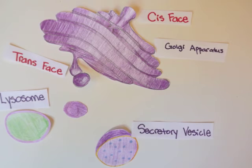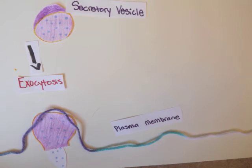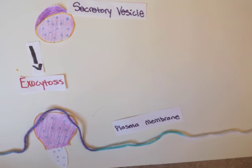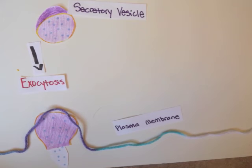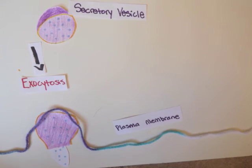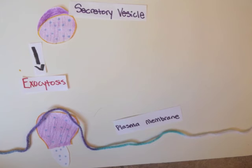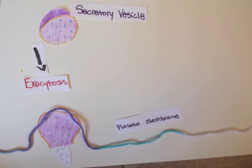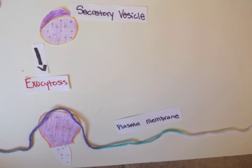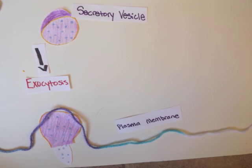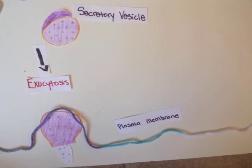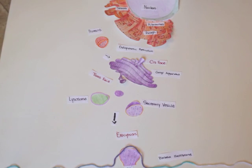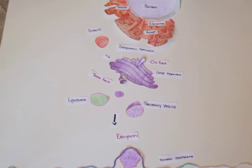Secretory vesicles contain secretions that will be discharged from the cell through exocytosis. Lysosomes contain digestive enzymes and are responsible for cleaning up damaged parts of the cell and secreting the waste products. During exocytosis, the vesicle travels through the cytoplasm, fuses to the plasma membrane, and ejects its contents into the extracellular environment. The plasma membrane acts as a semi-permeable barrier between the cell and the extracellular environment. Thanks to this demonstration, we can see how the membrane flow of these organelles enables proteins to be manufactured and utilized in the body.